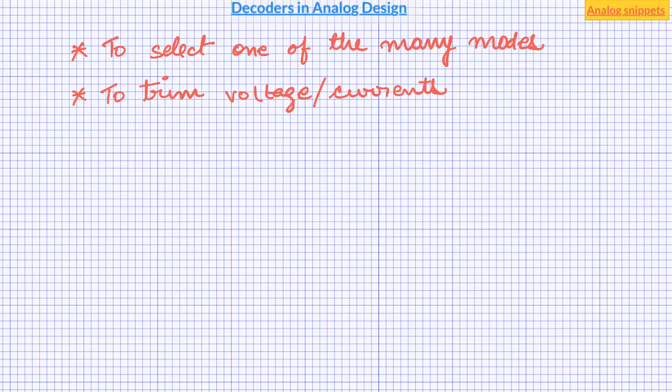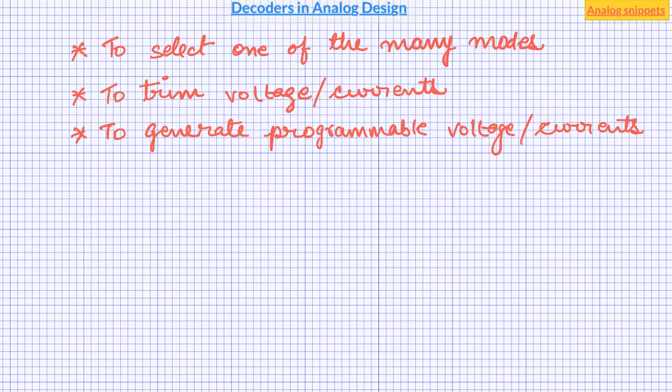In analog design, decoders are used to select various modes, in trimming voltage or current signals, to generate programmable voltages or currents, in digital to analog converters or DACs, or in general anywhere in the design where you have to select, configure, or calibrate anything.